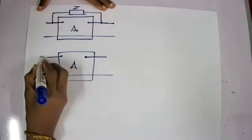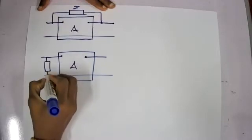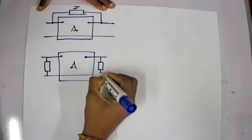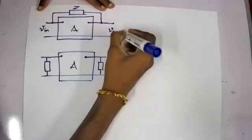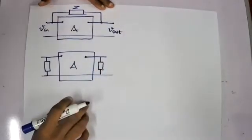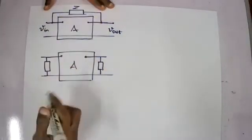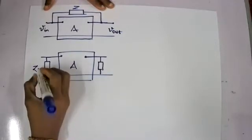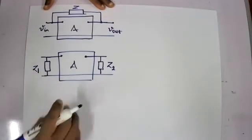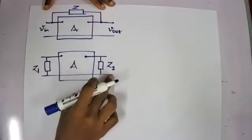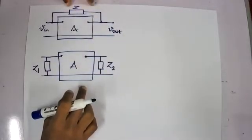The new circuit will be something like this. This is my amplifier with a gain of A. And then I have a component Z here, and then a component Z at the output side. So if this is V-in and this is V-out, my A will be V-out by V-in. Let Z1 be the input-side component and Z2 be the output-side component — these represent the equivalent components of the feedback impedance Z.